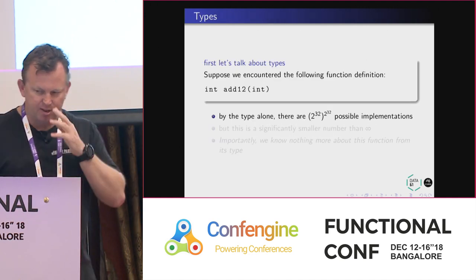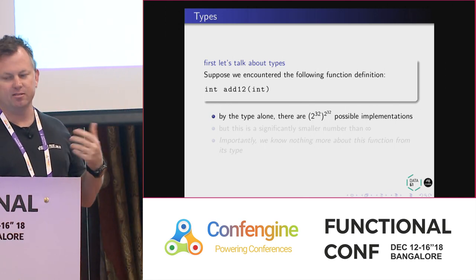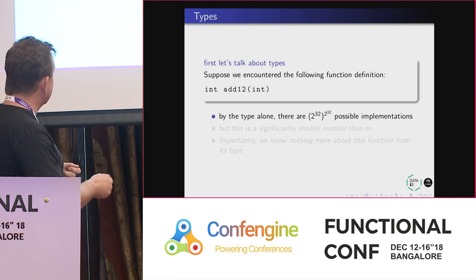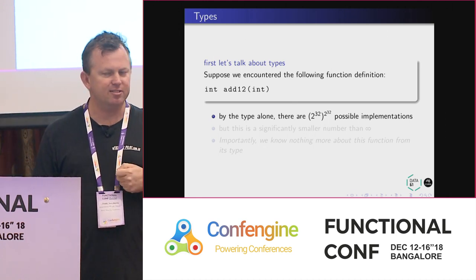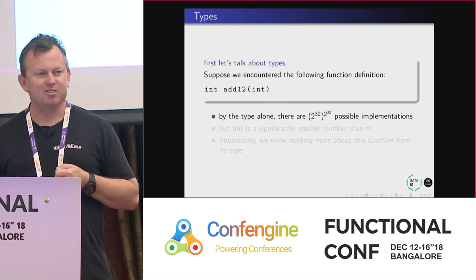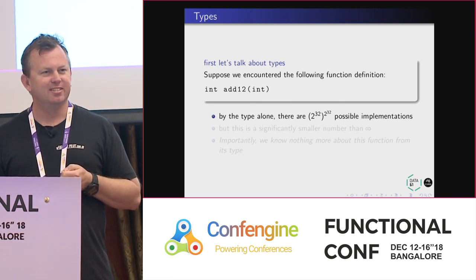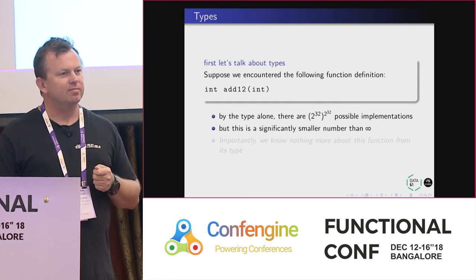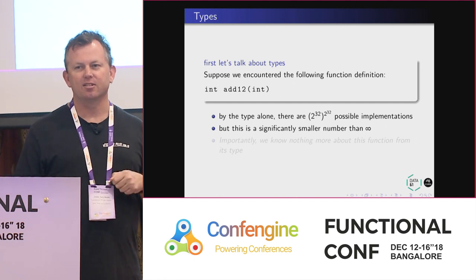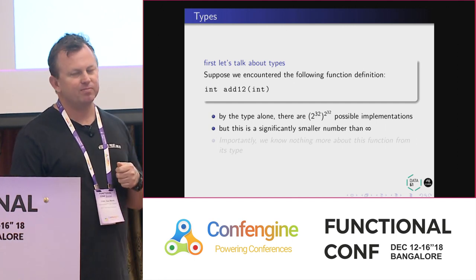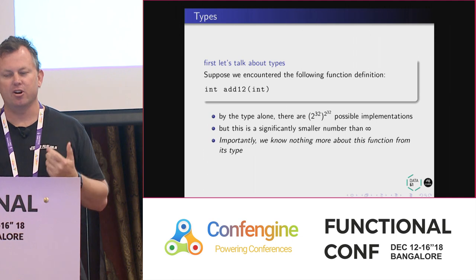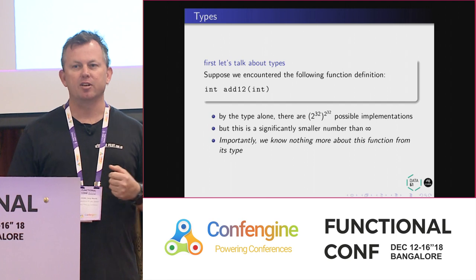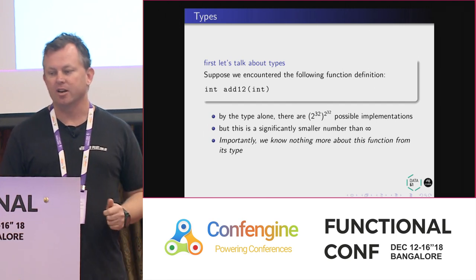Here's a contrived example. If I said to you write me a function that takes an Int and returns an Int — that's Int to the power of Int possible implementations. That's a huge number. I have no idea what you're going to do. But the type doesn't tell us much — there's no information conveyed beyond it won't return a string. There are so many possible implementations.